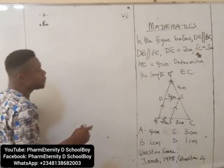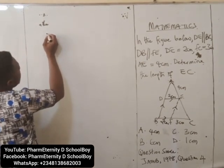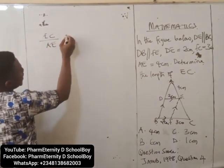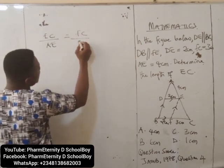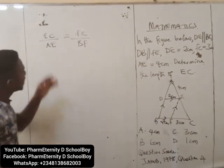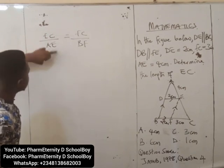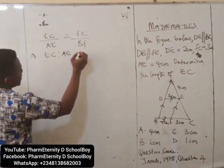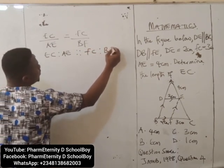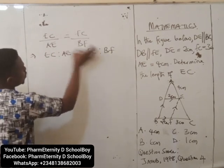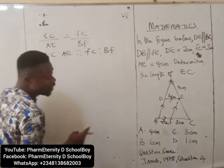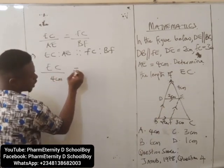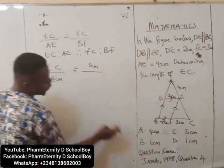So using this theorem, it implies that EC over AE is equal to FC over BF. That is, EC is to AE as FC is to BF. That is the implication. So we now have EC over 4cm equals FC which is 3cm over BF which is 2cm.